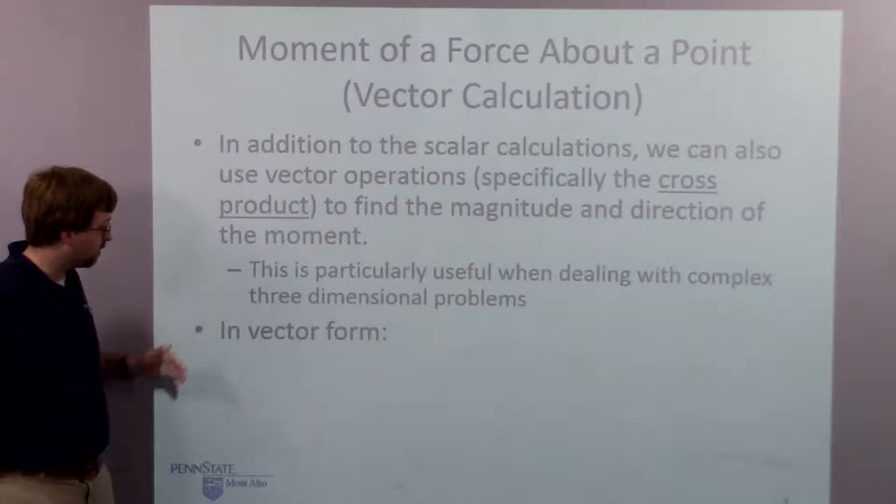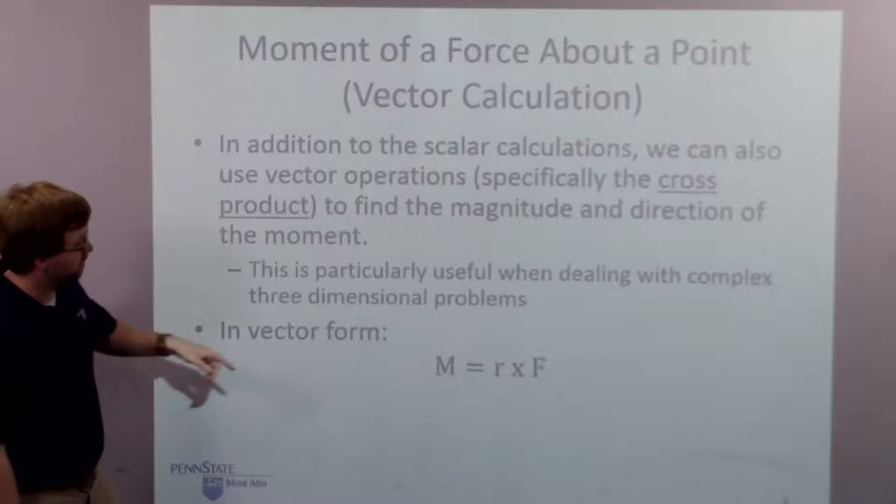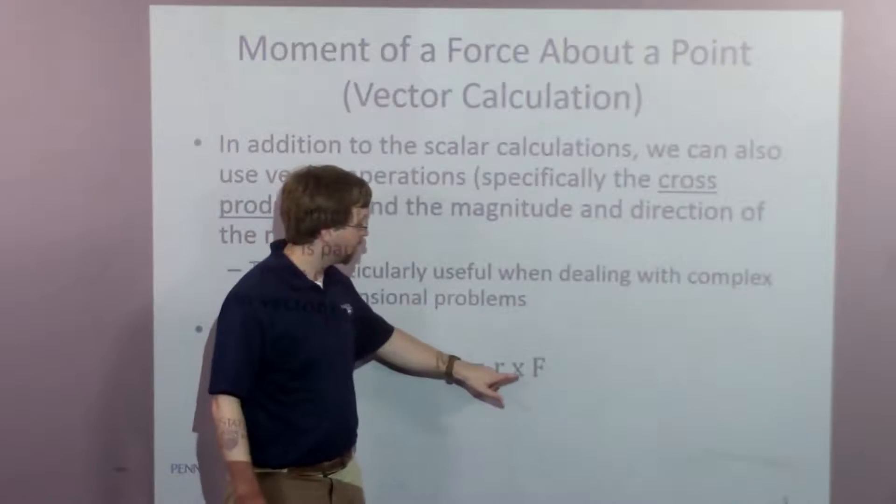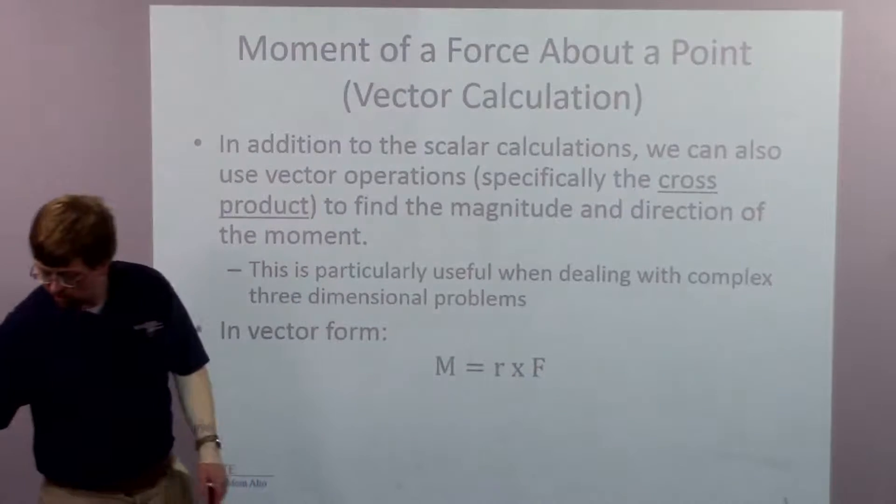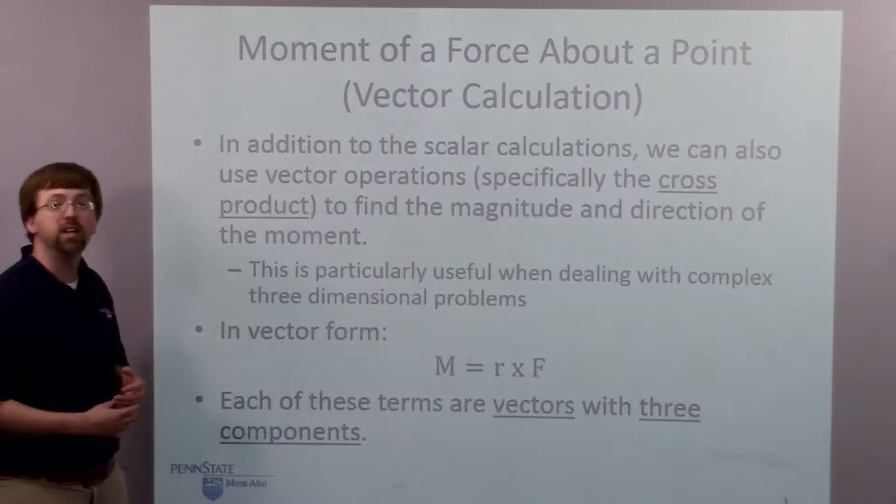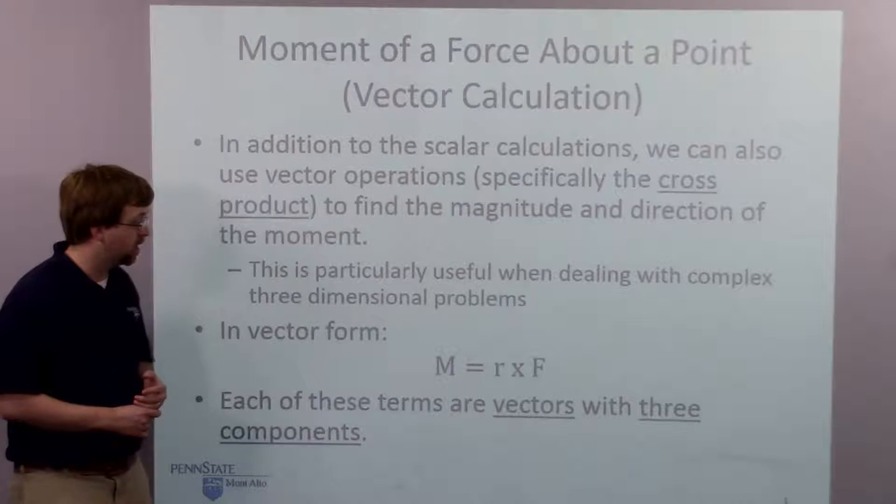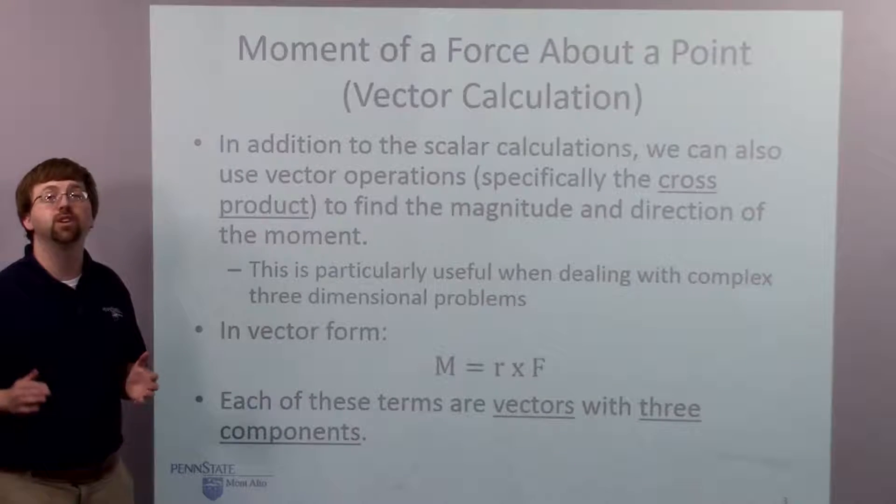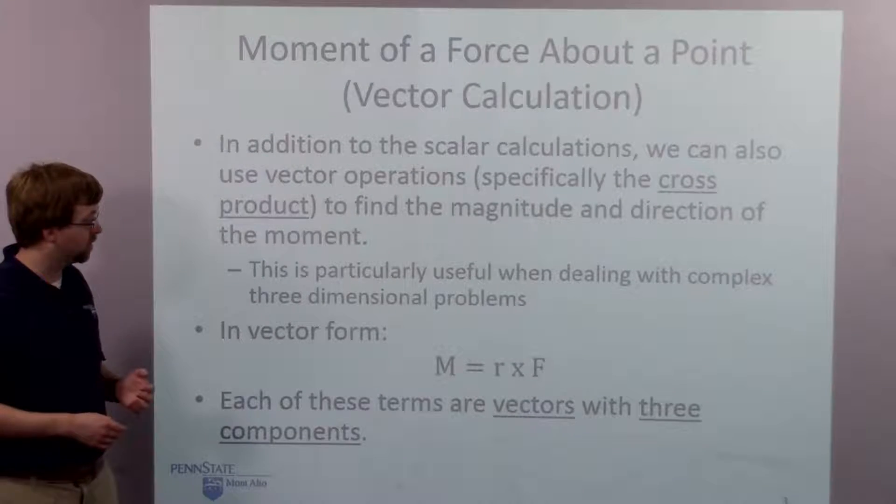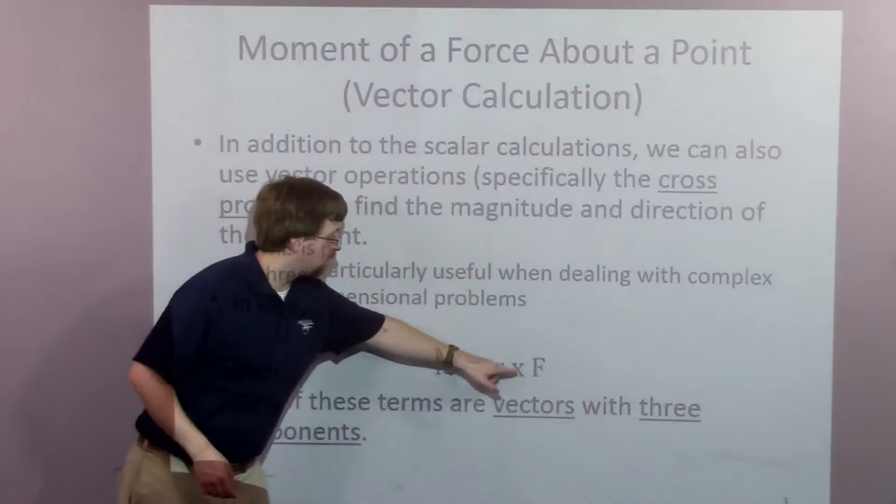So in vector form, our equation is the following. The moment vector is going to be equal to r cross f. And each of these items is a vector, and each one is going to have three components. So even if we do a 2D problem, the z component in each of those is going to be zero. So m equals r cross f.